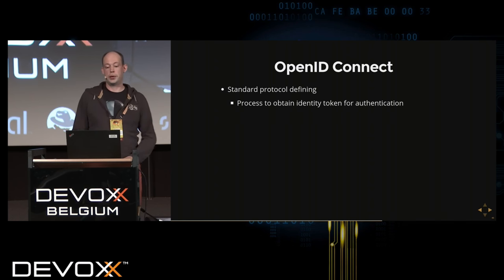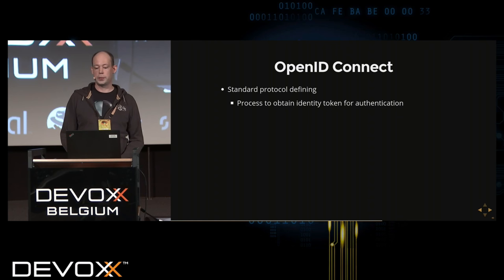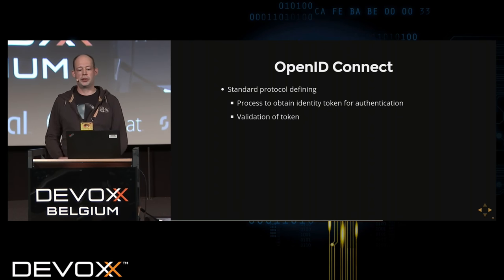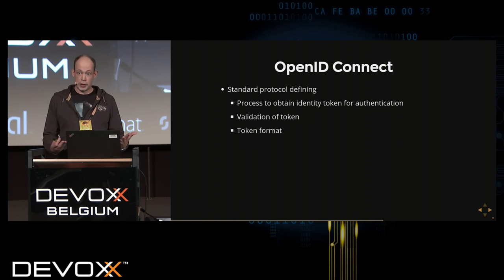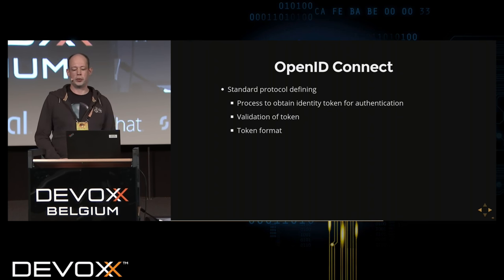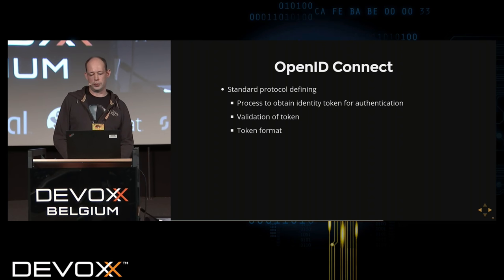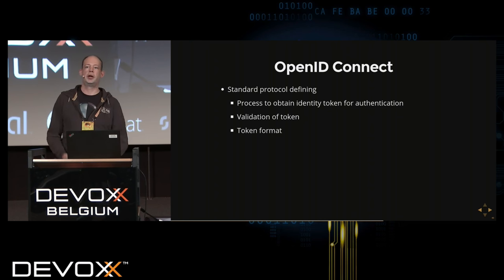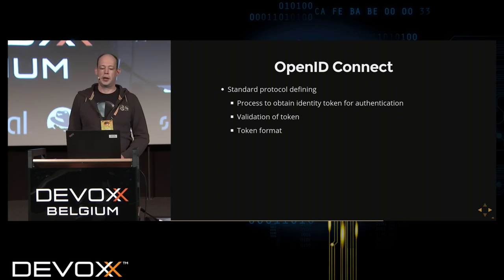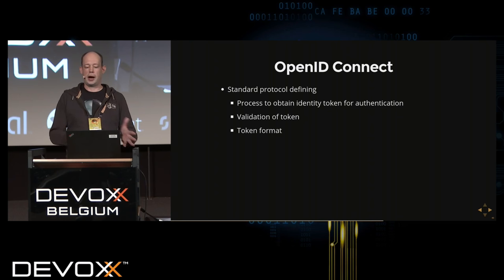OpenID Connect defines a standard protocol for obtaining the token for authentication, for validating the token, and it defines a token format. What it does not include is the actual login process or the credentials used — any implementation is free to use whatever security requirements dictate: username/password, two-factor authentication, smart cards, etc. The specification only defines the flow between the authentication service and the application.